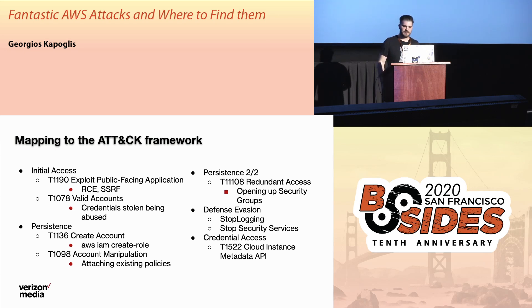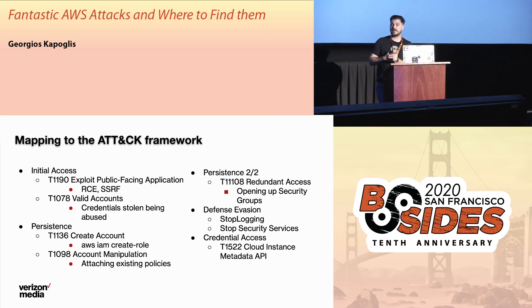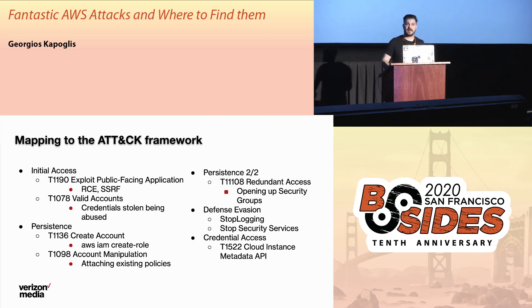Next, we have a technique through valid accounts. For example, there have been cases of people having exposed AWS credentials in GitHub repos or other places, and an attacker can just grab these and go in like a valid user.